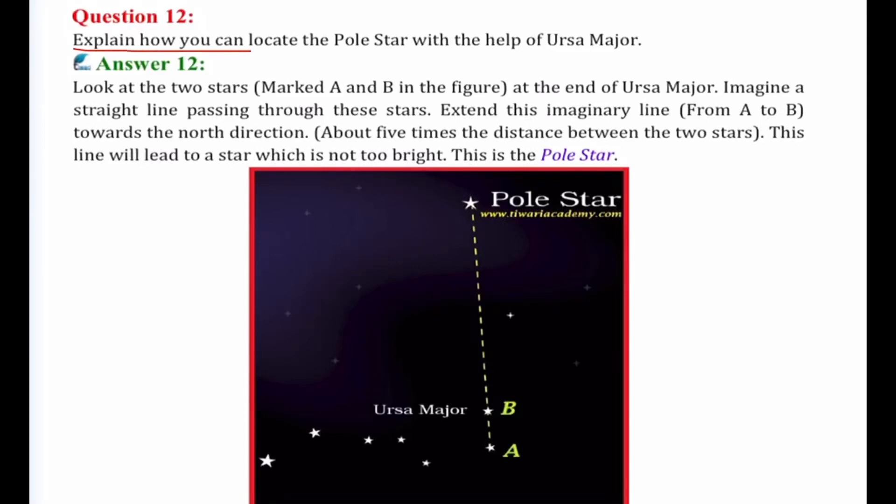Next is question number 12. Explain how you can locate the pole star with the help of Ursa Major.